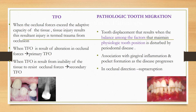Coming to trauma from occlusion: when occlusal forces exceed the adaptive capacity of the tissue, tissue injury results, and this injury is termed as trauma from occlusion. There are two types: primary and secondary. When TFO is the result of alteration in the occlusal forces — for example, due to a crossbite or abnormal bite — this can lead to primary TFO.